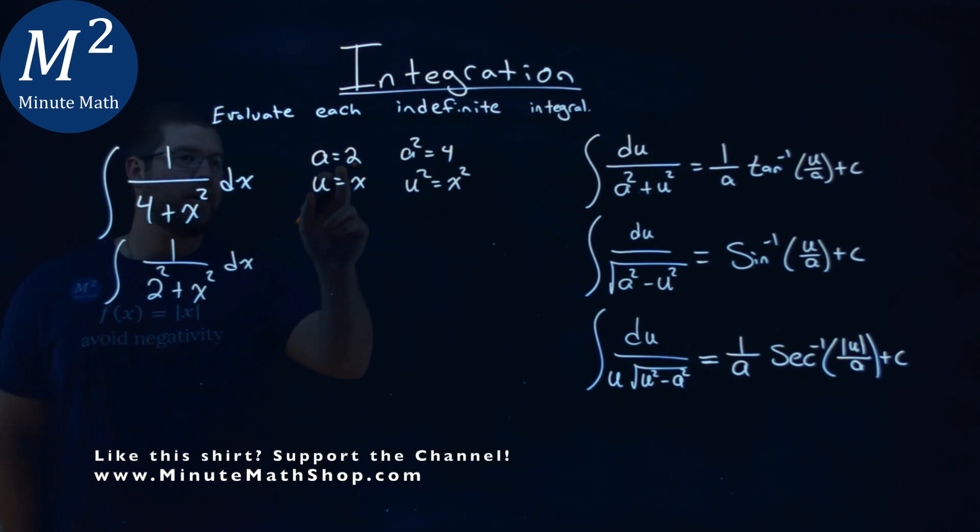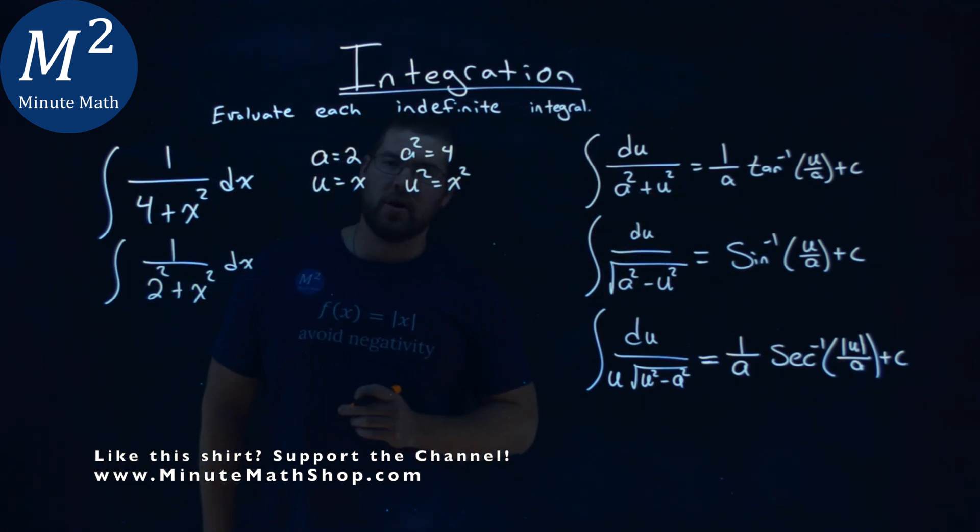And now we can see with our a value being 2 and our u value being x, we line up with our arctan formula.